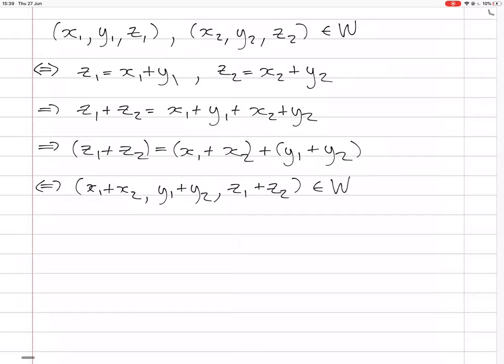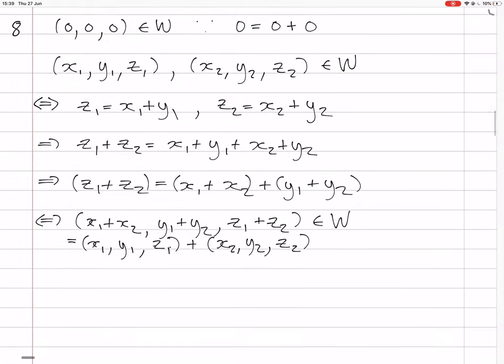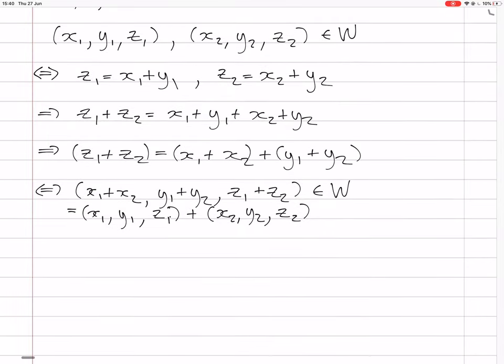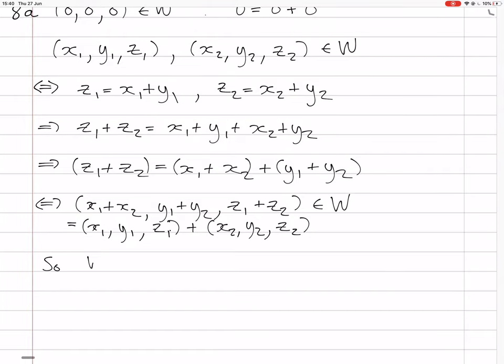But the point is that this vector that I've said is in W, that actually equals the definition of the addition of these two vectors, X1, Y1, Z1 and X2, Y2, Z2. So that means that that vector, that sum is in W. So that means it's closed under linear combinations, it's got the zero vector, so it is a vector space. That was 8A. It is a subspace. So W subspace of V.